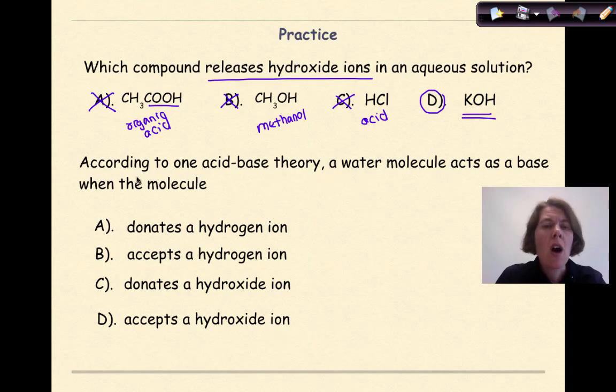Let's look at the other question. According to one acid-base theory, a water molecule acts as a base when the molecule donates a hydrogen ion, accepts a hydrogen ion, donates a hydroxide ion, and accepts a hydroxide ion. Well, C and D are out because the Bronsted-Lowry theory of acids and bases only deals with the transfer of hydrogen ions. So we're looking at what is a base. If you chose B, you are correct because water can accept a hydrogen ion because of the presence of the lone pair and be considered basic.